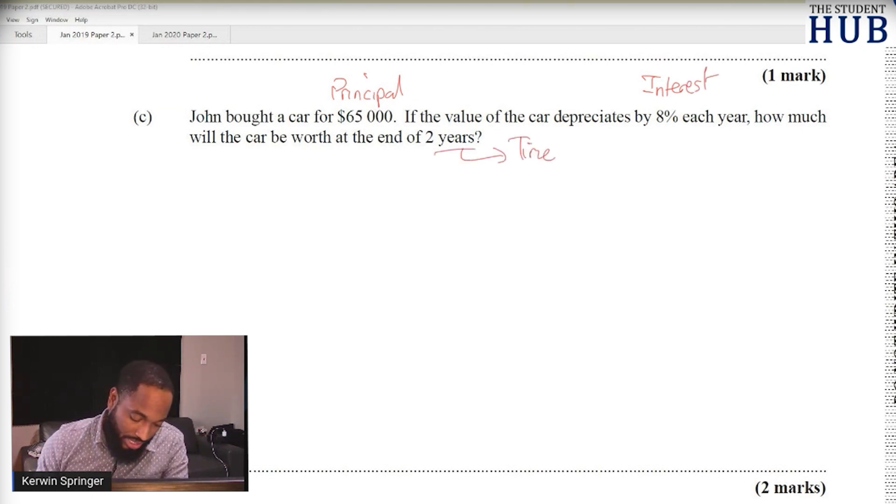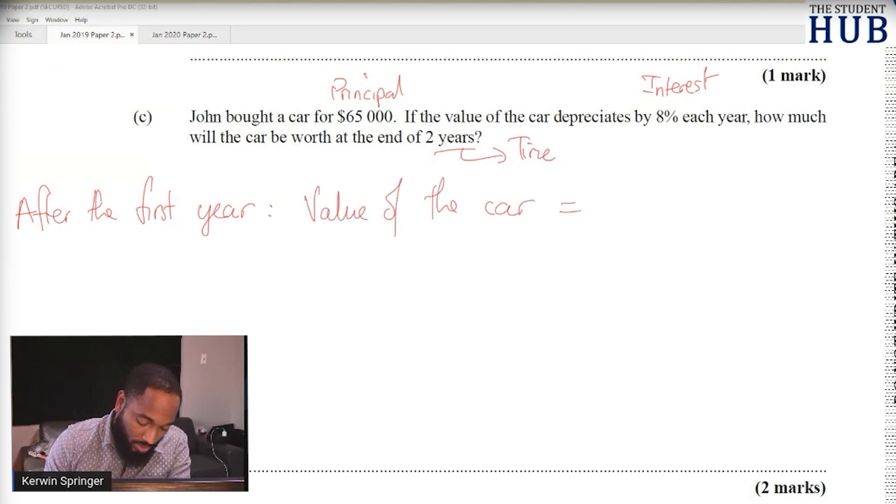You can work it out year by year. After the first year, the value of the car will be 8% less than the principal value. 8% less indicates that the value of the car would be equal to 100 minus 8%, which is 92 over 100. You can put 0.92, so 0.92 times 65,000 equals $59,800.